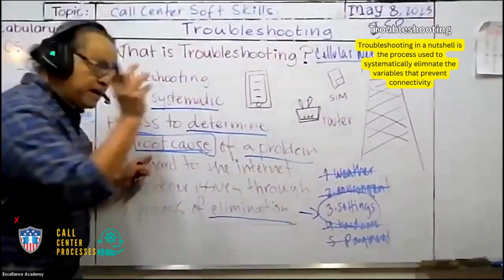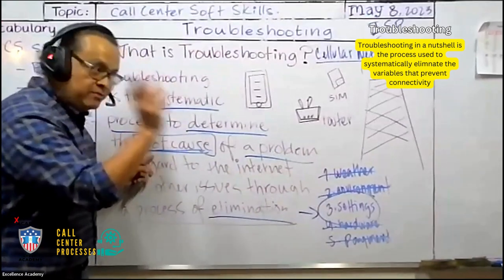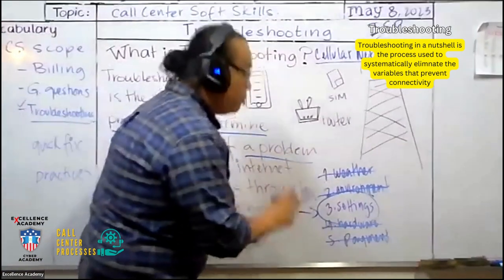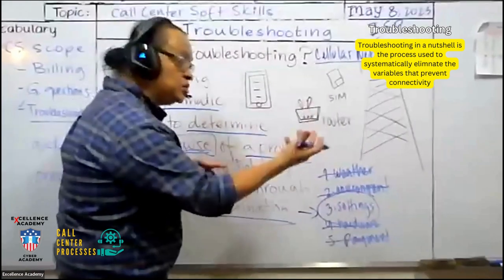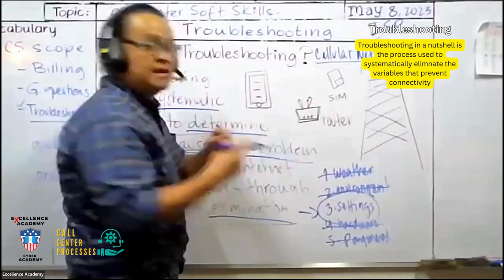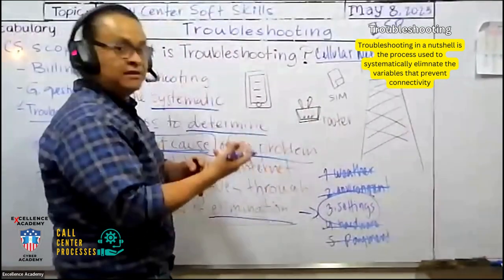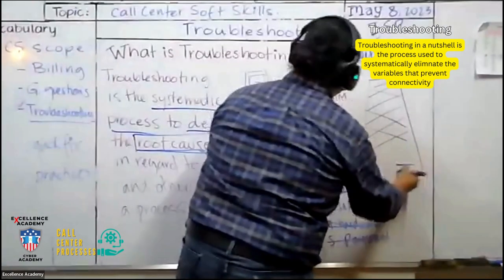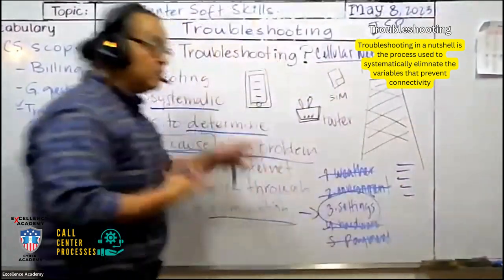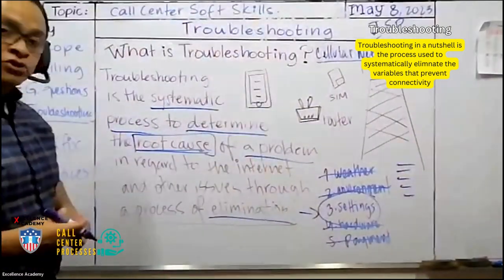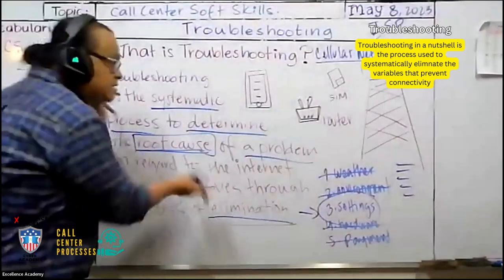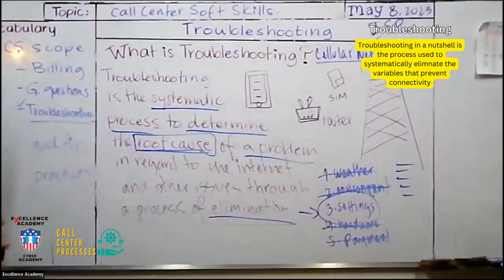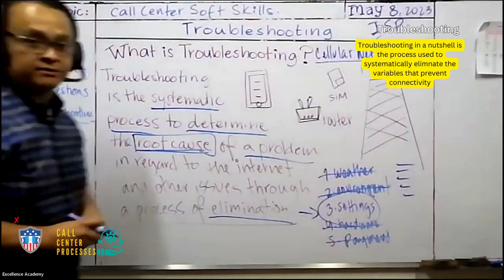So, that's basically, in a nutshell, what is troubleshooting. It's a process that we use to eliminate the variables that could be affecting our device from connecting to the internet. By elimination, we will determine the root cause of the problem. By determining or understanding what is the root cause, then we can apply different procedures, different ways of correcting or fixing the problem. So, for settings, there are like a hundred different things that we can try in order to assist the customer. So, basically, that's troubleshooting. And that's what we're going to start learning about today.